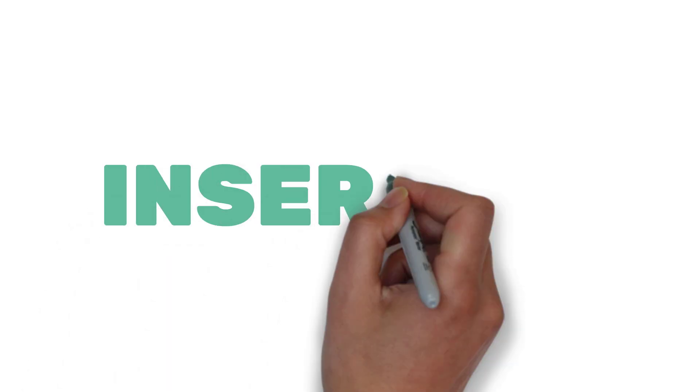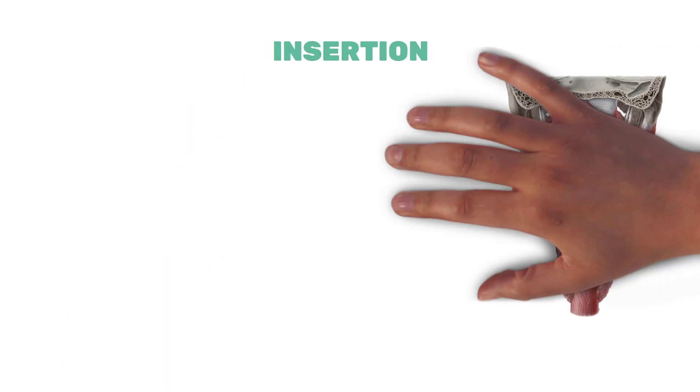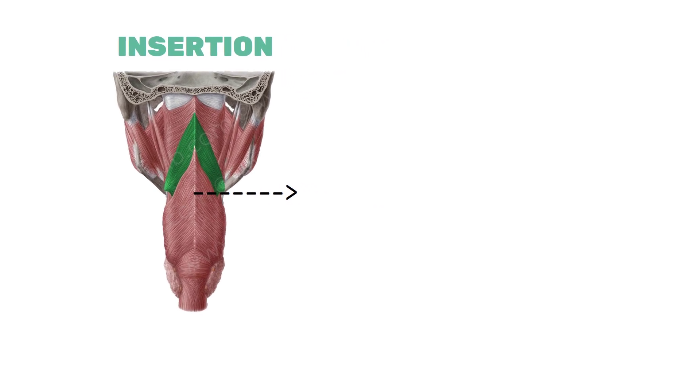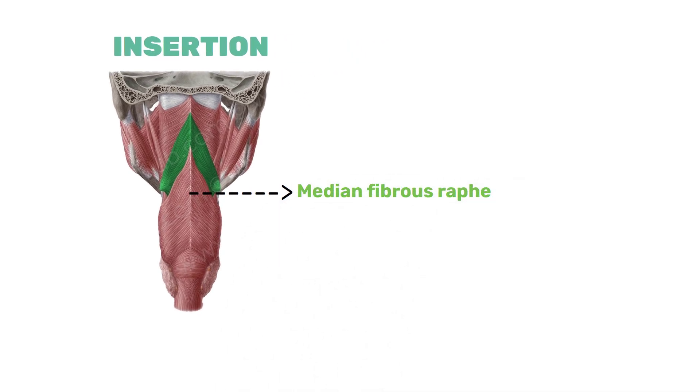Now the insertion. So basically all these three muscles are inserted in the median fibrous raphe on the posterior wall of pharynx.